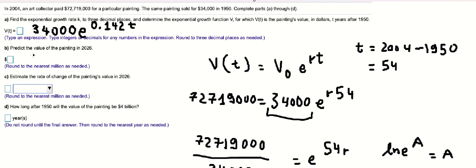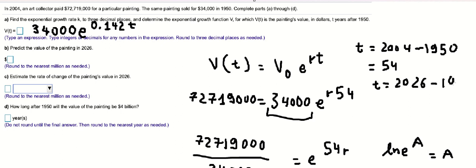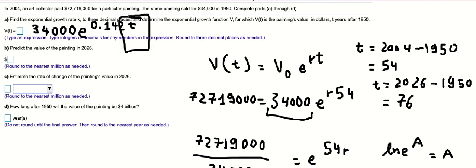For the next part, we need to predict the value of the painting in 2026, so we use a similar approach. From 1950 to 2026 is 76 years, so we put t = 76 into the formula here and calculate — you need to get about millions.